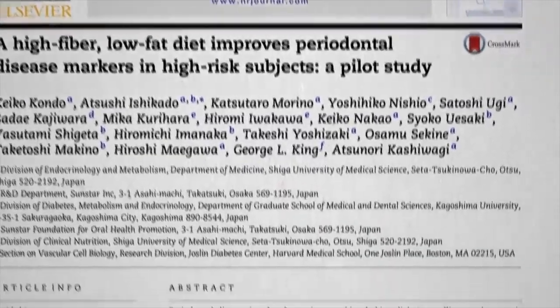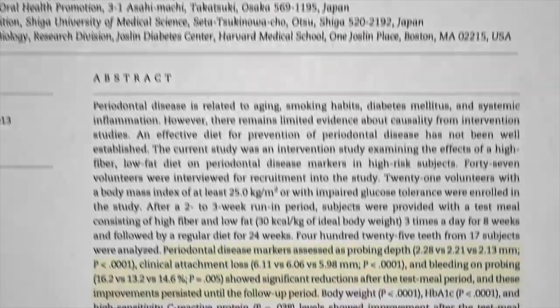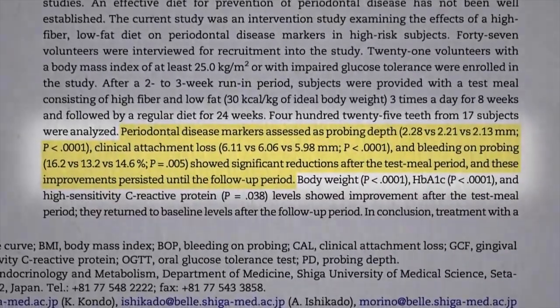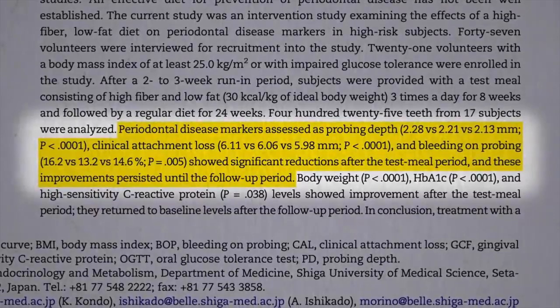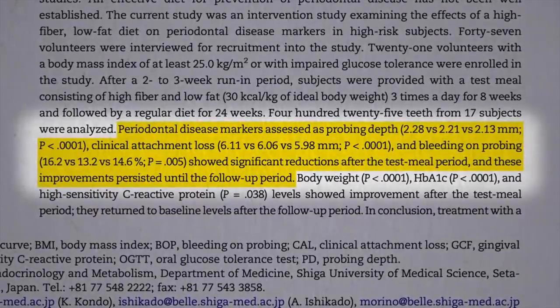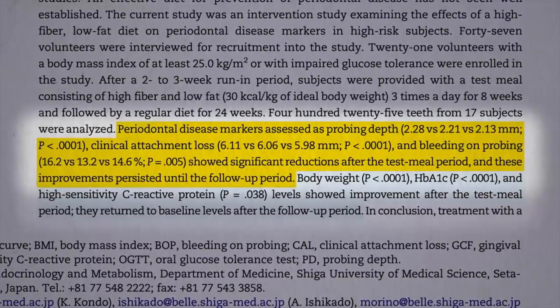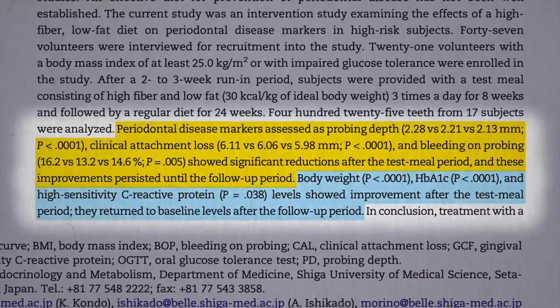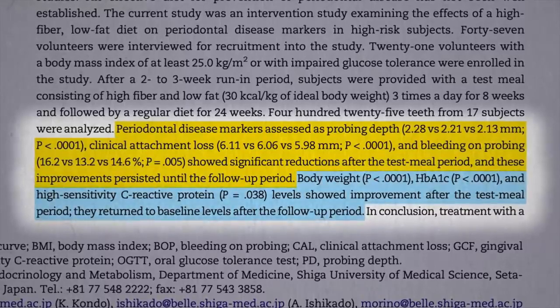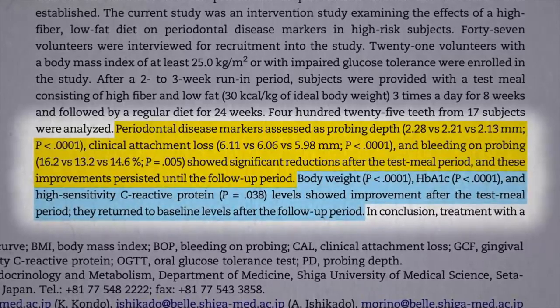In terms of probing depth, clinical attachment loss, and bleeding on probing — all the standard measures — improvements were found. And of course, eating a healthier diet also improved body weight, blood sugar control, and systemic inflammation.